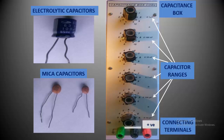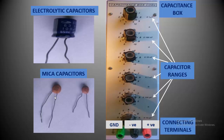Red is positive, black is negative, and green is ground. The values of the electrolytic capacitors are directly printed on the body of the capacitors. How to find out the values of mica capacitors? I have uploaded a separate video on this.